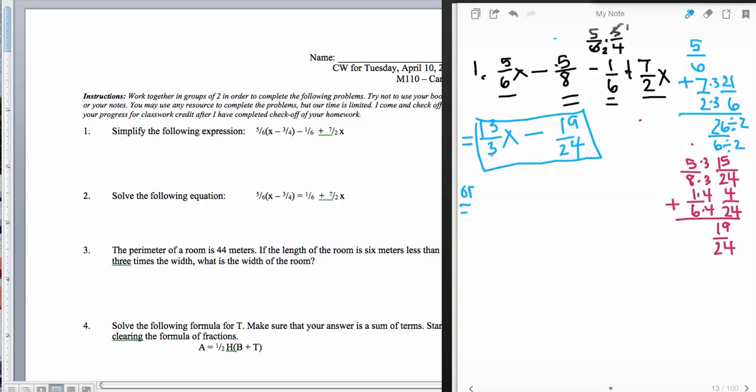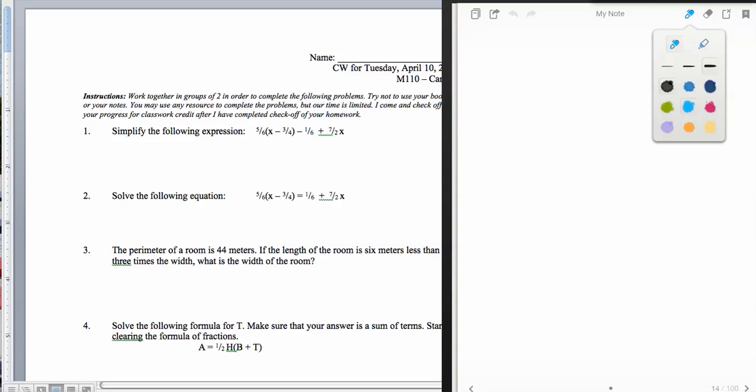Now if you wish, you could make 13/3 into a mixed number. 3 goes into 13 four times with 1 left over. And then denominator of a 3. So 4 and 1/3 x minus 19/24. But that's about the only other thing that you could do with it. And as I've told you in the past that when we have variables involved, most times we will leave those as improper fractions just because we don't want to be confused. Alright, moving on to our next problem, problem number 2.